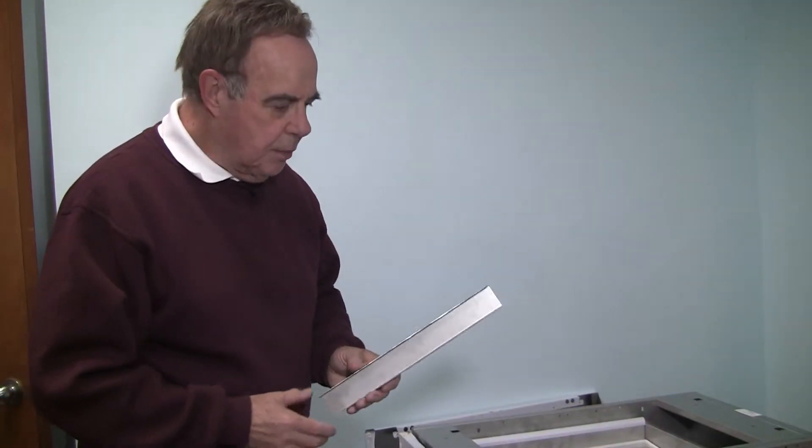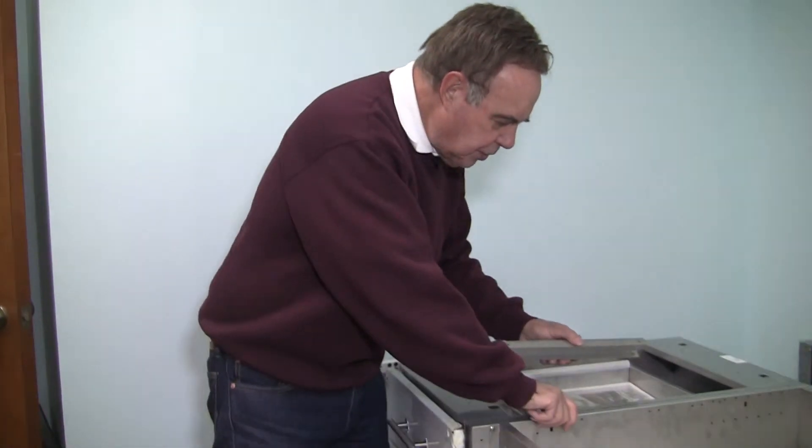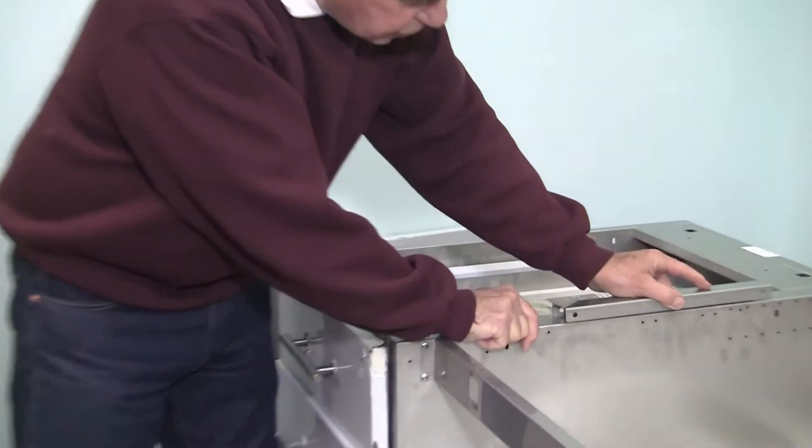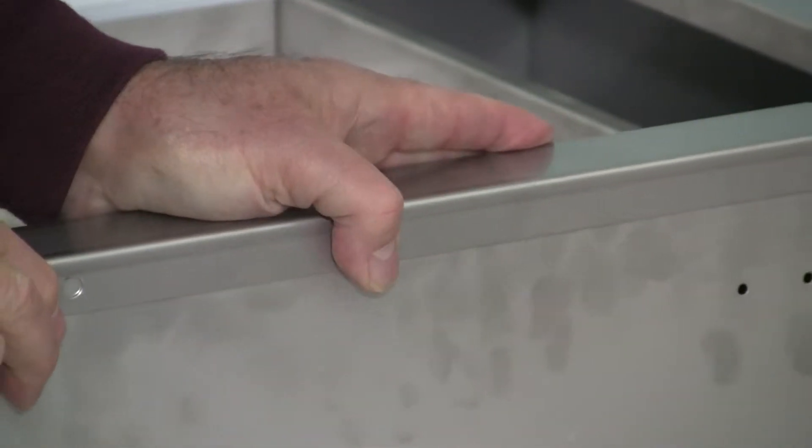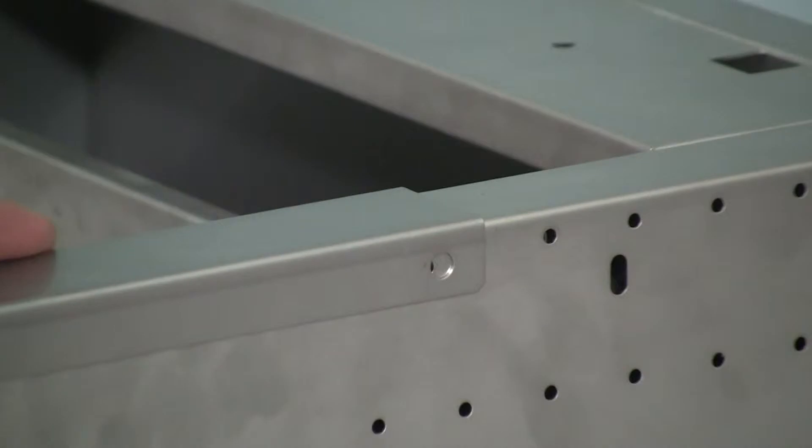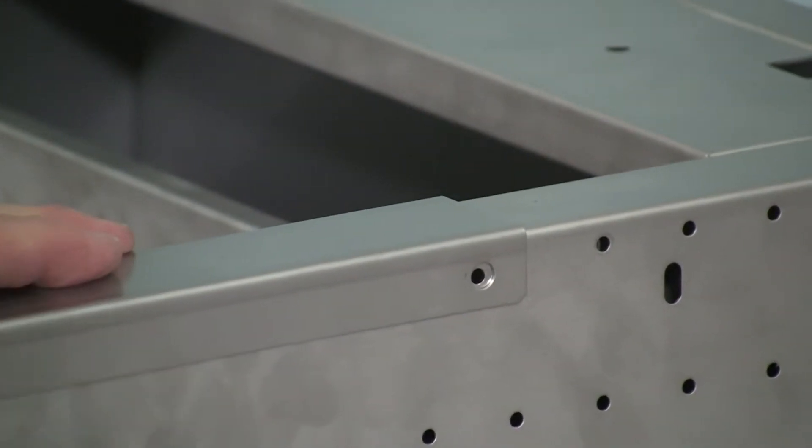Each cabinet comes with a U-channel and the U-channel is placed over the side walls of the two cabinets. Line up the holes and put four screws in.